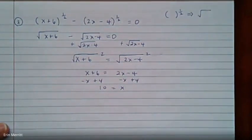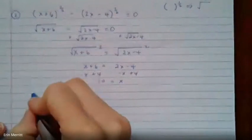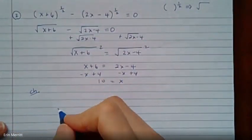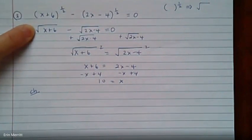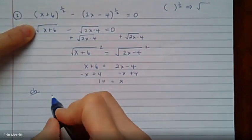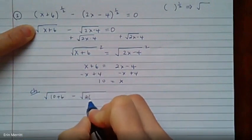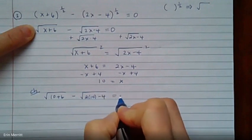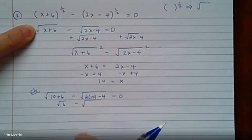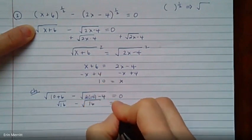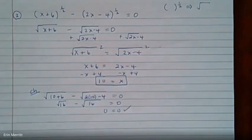Before we box it in, quick check. So if I plug in to the original, and we can take the original as with the one-halves or with the radicals, because those are both equivalent. We do the square root of 10 plus 6 minus the square root of 2 times 10 minus 4. We want to show that that's equal to 0. So radical 16 minus, well, 20 minus 4, that's radical 16. Yeah. 0 equals 0. And we're good to go.